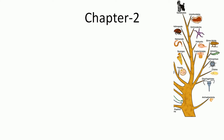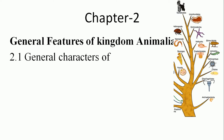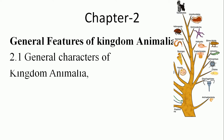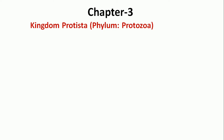Chapter Number 2 is a very small topic — the general features of Kingdom Animalia, including the general characteristics of Kingdom Animalia and grade of organization. Chapter 3 deals with Kingdom Protista — introduction, classification down to class level, and locomotion of animals.